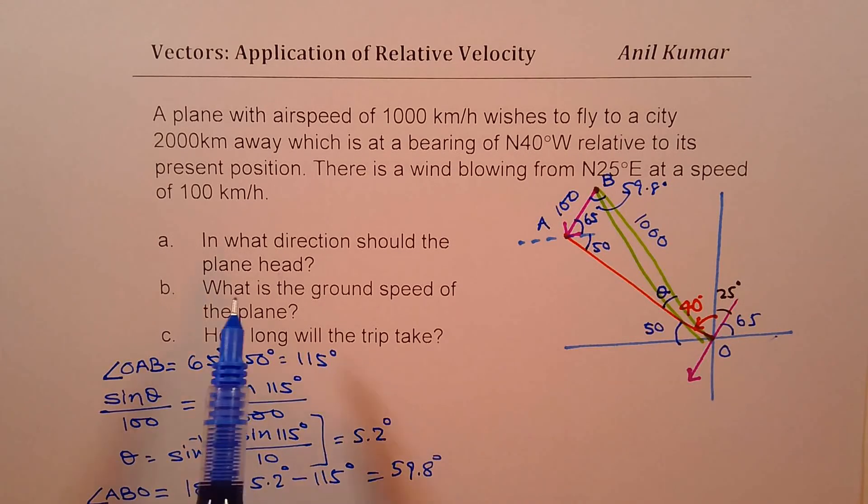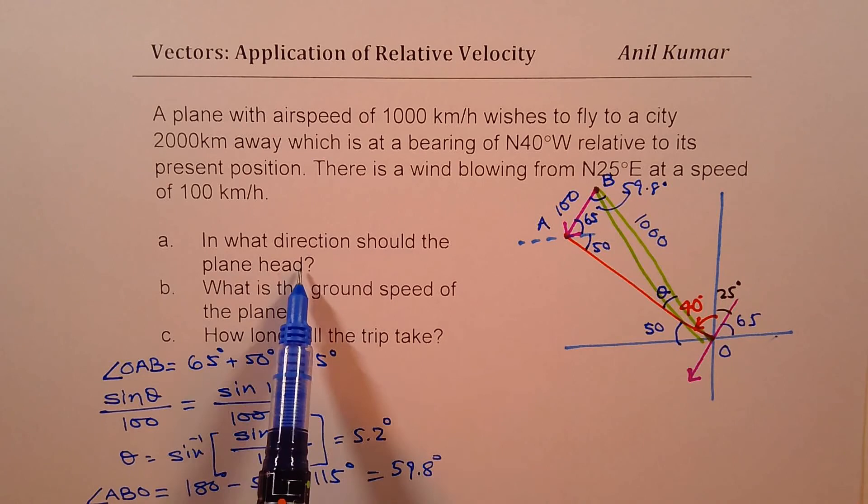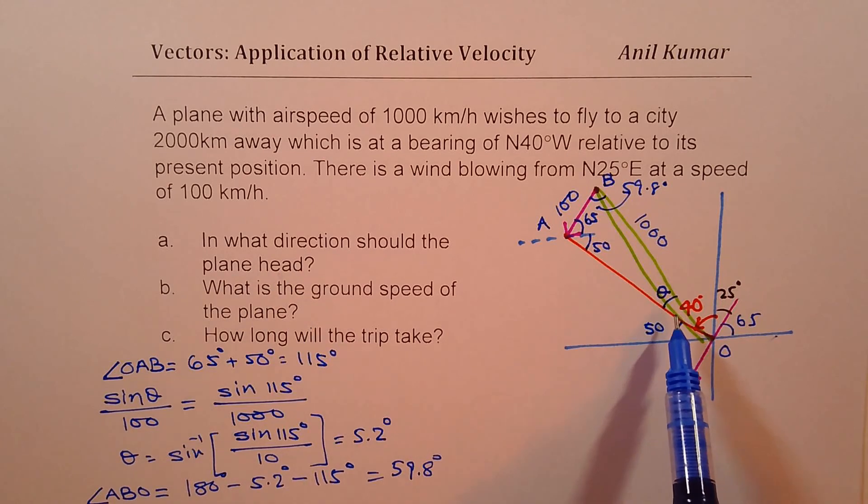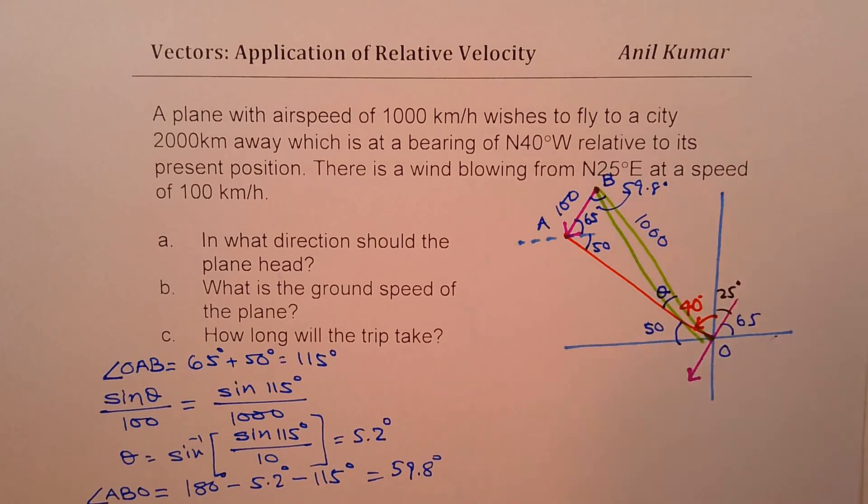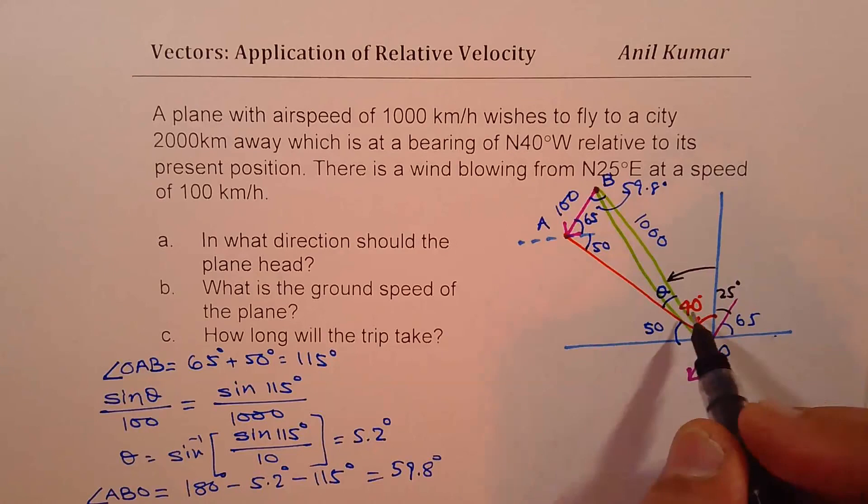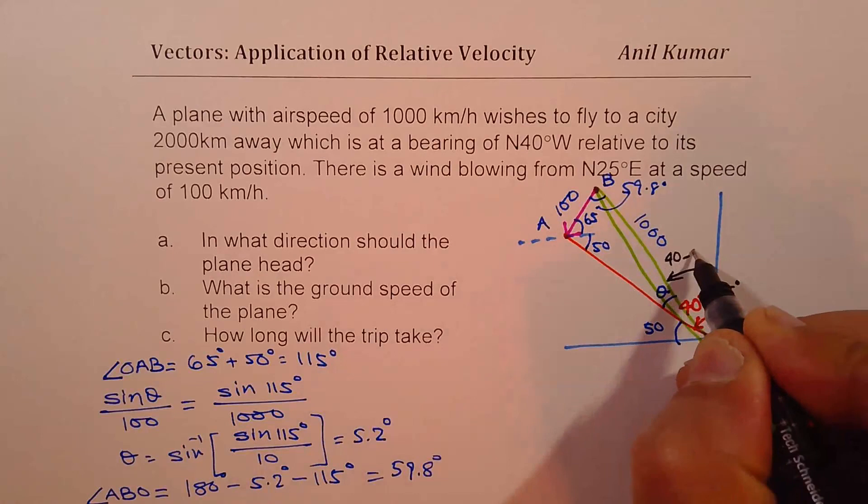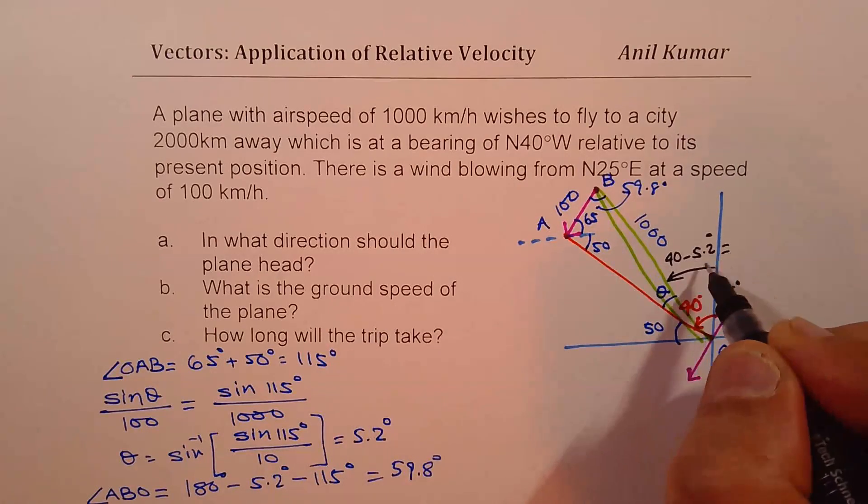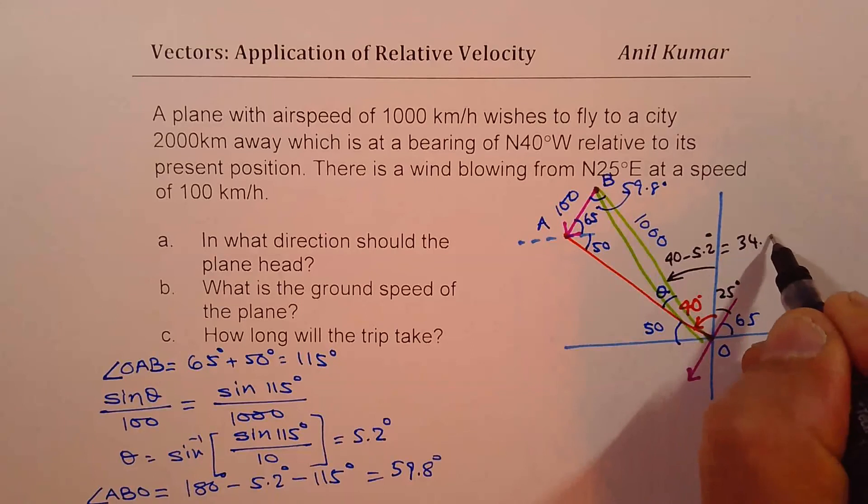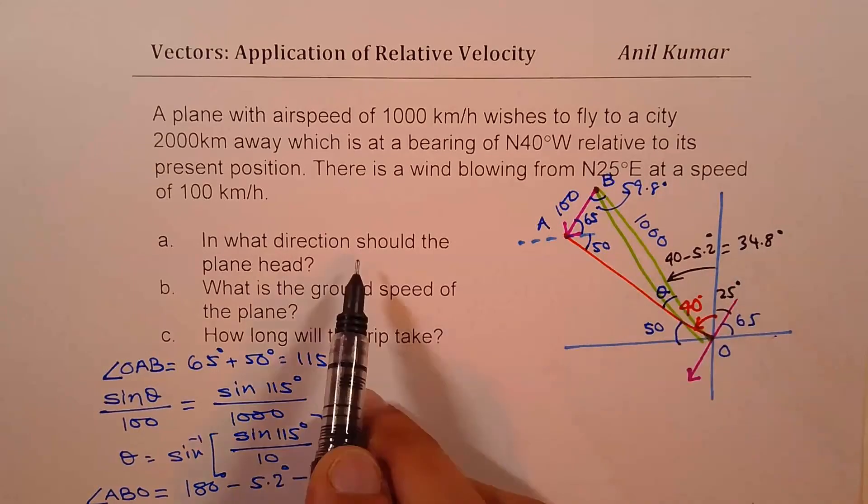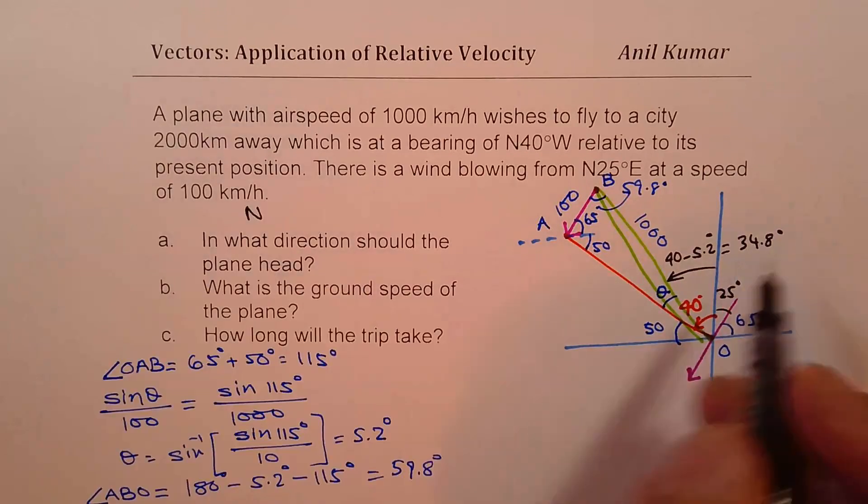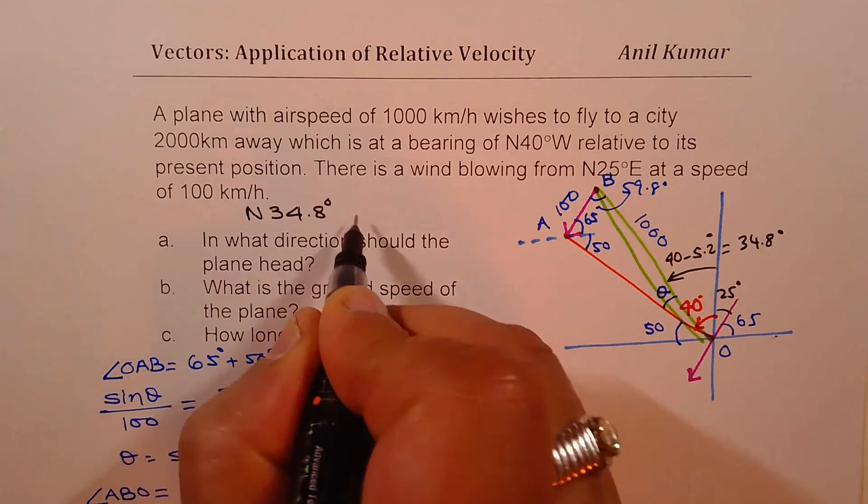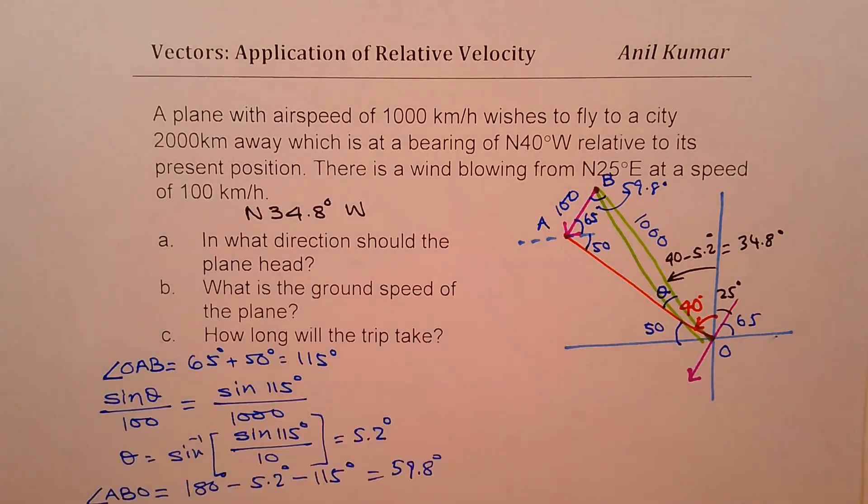The question here is, in what direction should the plane head? Now, to give this direction, it is a good idea to use angle from north. So let me write down this answer as here. How much is this angle? 40 minus 5.2. So it is 40 minus 5.2 degrees, which is 34.8 degrees. You could explain this angle as from north, 34.8 degrees west. So that is the direction of plane heading.